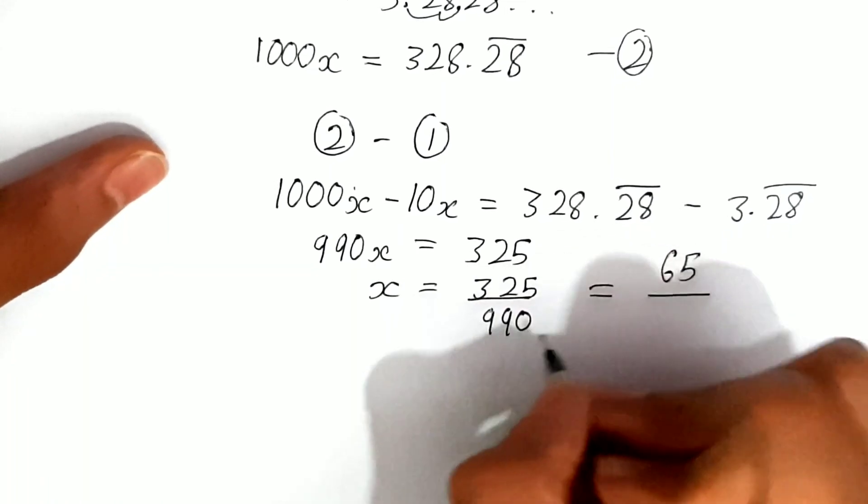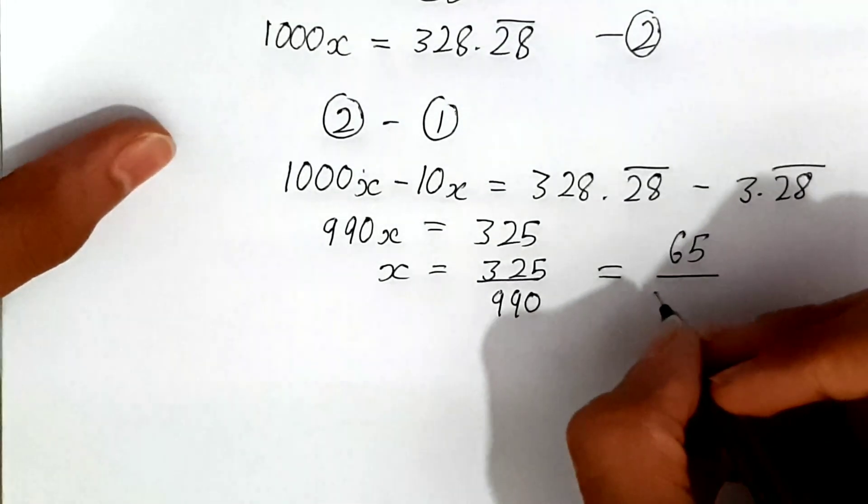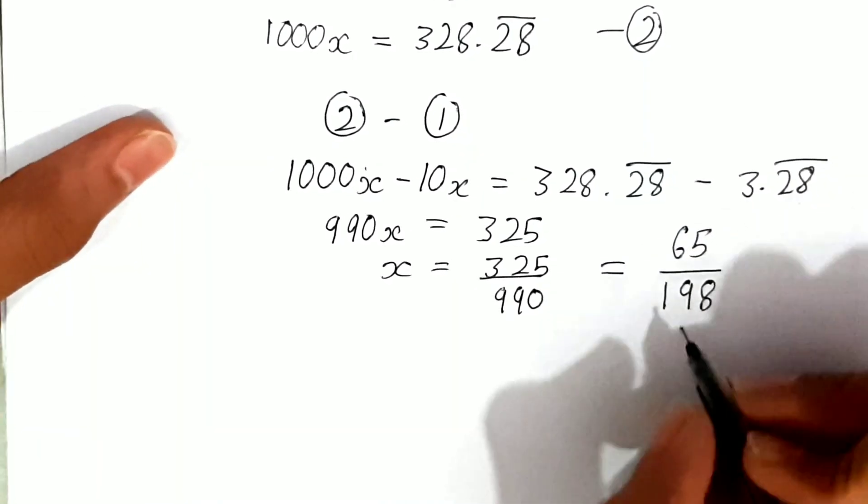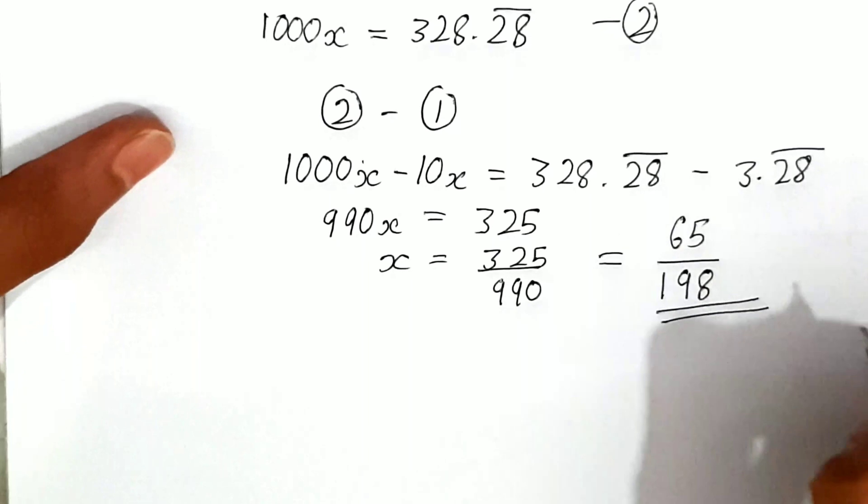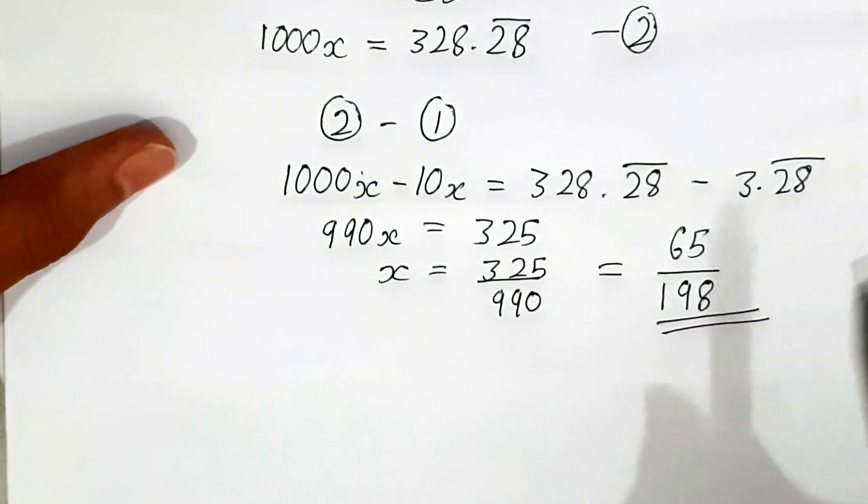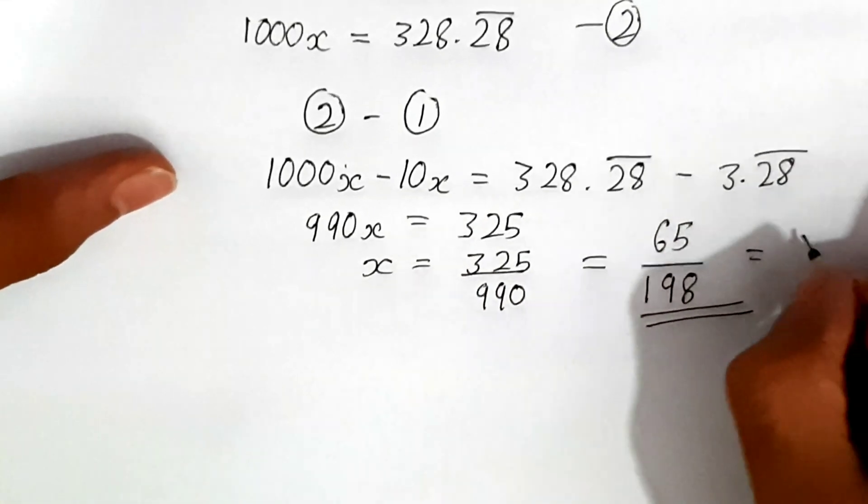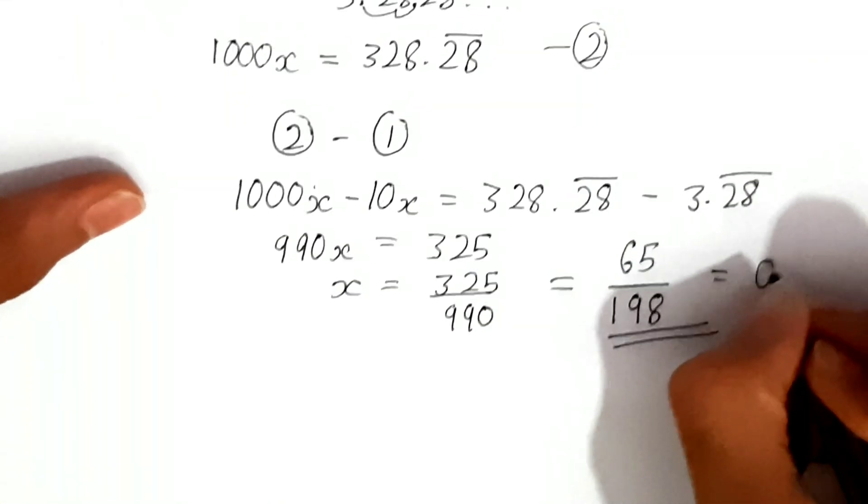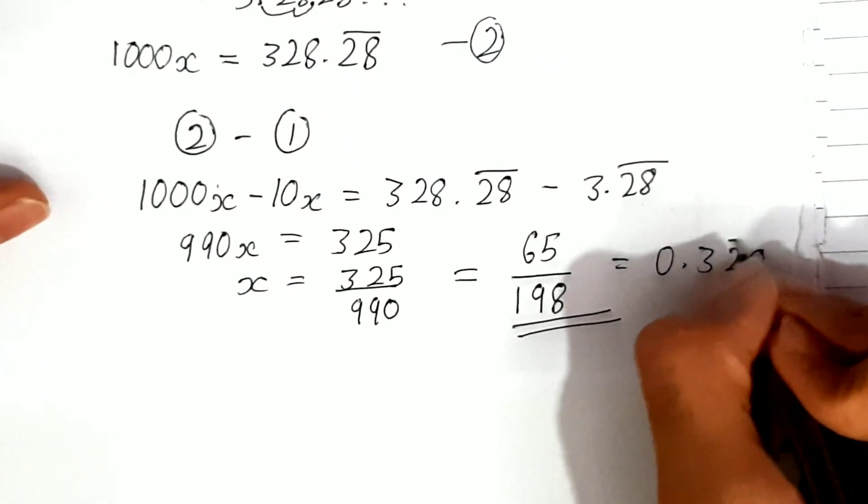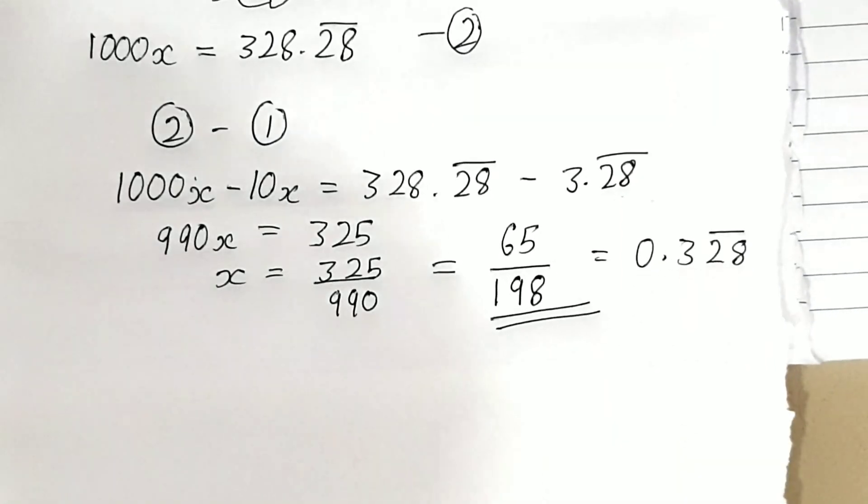Therefore, 0.3̄2̄8̄ (where the bar is only on 28) equals 65/198 in fraction form. This is our answer.